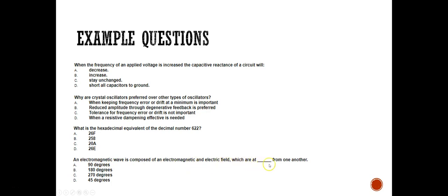An electromagnetic wave is composed of electromagnetic and electric fields that are at what angle from one another? Different angles are given: 90 degrees, 180 degrees, 270 degrees, 45 degrees. We learned this in communication. The electromagnetic and electric fields are perpendicular to each other, which is 90 degrees, so A is the right answer.